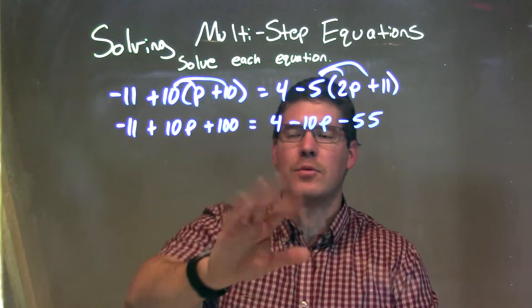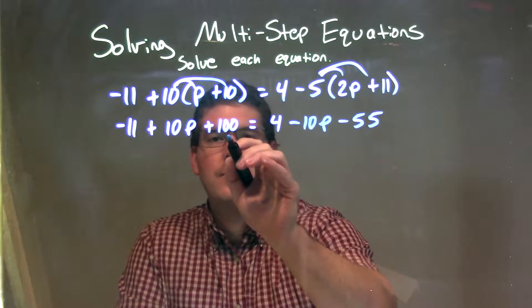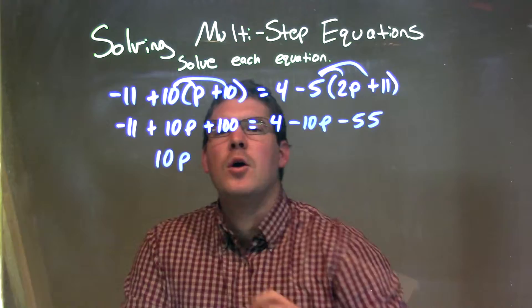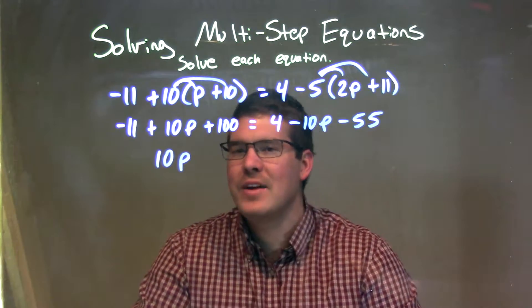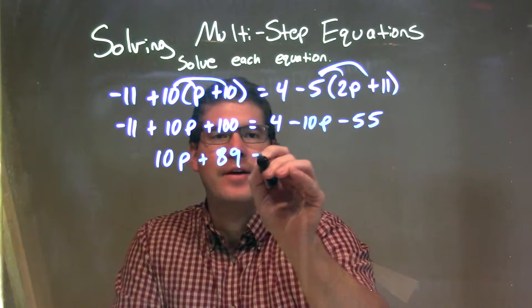Now let's simplify on each side of the equal sign a little bit more, combining like terms. Negative 11 plus 100 - the 10p just comes down. Negative 11 plus 100, we can combine those to get 89.